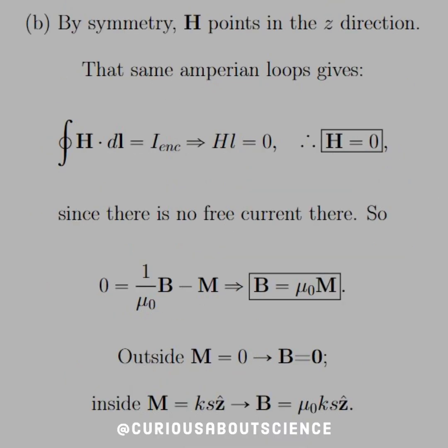But for part B, we have by symmetry, H points in the Z direction, and the same Amperian loop gives us closed integral H dot DL equals I enclosed. When you apply that, there is no current enclosed. So that's HL equals 0, therefore H equals 0.